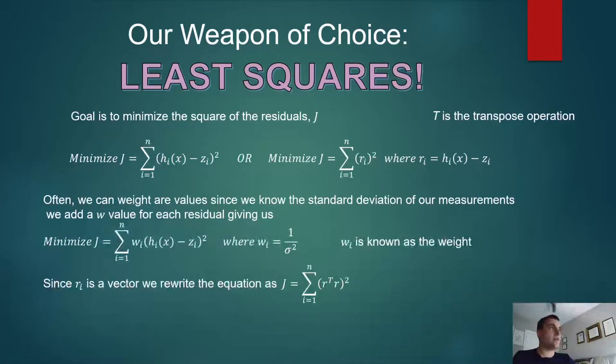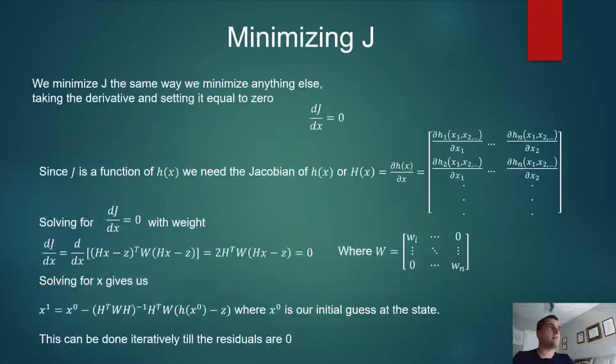Our goal for least squares is to minimize j, which is nothing more than the sum of the squares of the differences between the expected measurement and the actual measurement. Oftentimes, we'll put some kind of weight onto the measurements that's basically a description of how accurate it is. It's given by one over sigma squared, sigma being the standard deviation of the measurement. The way we minimize j is the way we minimize anything else, by setting the derivative with respect to the state variables equal to zero. Because we're taking a derivative, we'll also need the derivative of h, or the Jacobian, which is a matrix which we do by just taking the partial derivatives with respect to each of our x variables here.